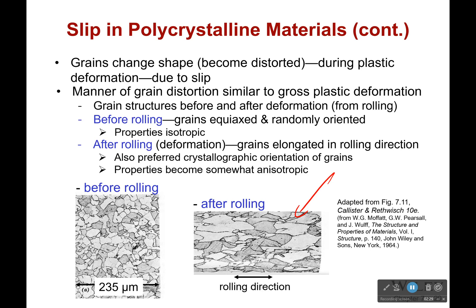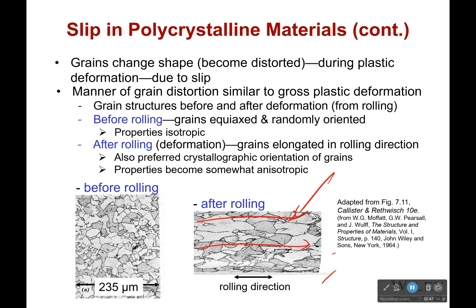Also, because we have made all the grains longer and thinner, there is a somewhat preferred crystallographic direction — this is where most of them are directed. Even if they were angled one way to begin with, now that they're longer and thinner, they're still kind of stretching in that direction. This makes the properties of the material somewhat anisotropic. Remember that single grain properties can be anisotropic, and polycrystalline materials usually are isotropic, but if we change this by working them, the material can have anisotropic properties once more.